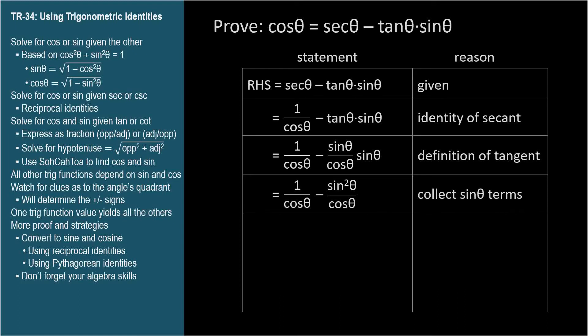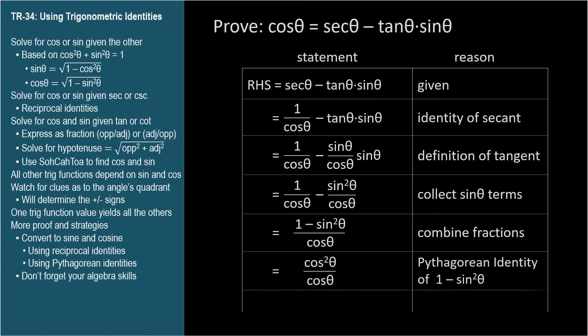Now we have two fractions with the same denominator. So we can combine the numerators to get 1 minus sine squared theta over cosine theta. From our Pythagorean identities, we know that since sine squared theta plus cosine squared theta equals 1, then 1 minus sine squared theta equals cosine squared theta. So we'll make this substitution by the Pythagorean identity of 1 minus sine squared theta. This leaves us with cosine squared theta over cosine theta, which cancels and simplifies to cosine theta, which is the right-hand side. So we've proven the identity as asked.